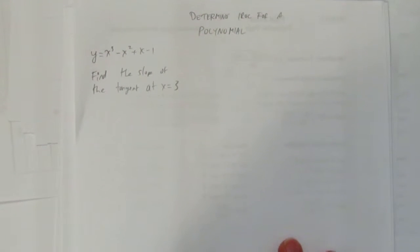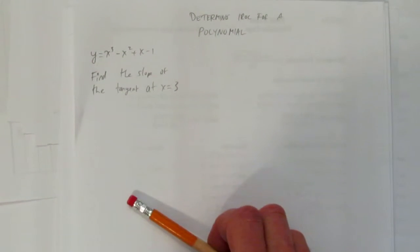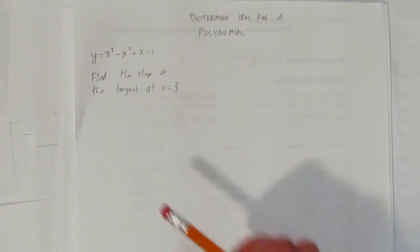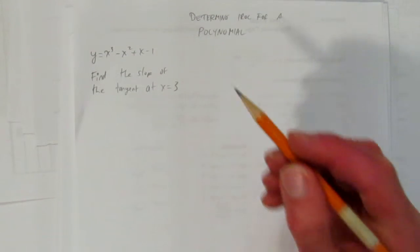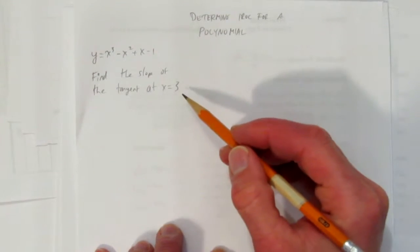In this video, we'll determine the instantaneous rate of change for a polynomial. The polynomial given is y equals x cubed minus x squared plus x minus 1. The question says: find the slope of the tangent at x equals 3.